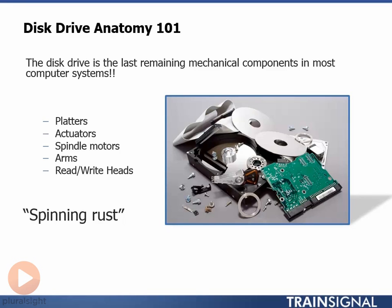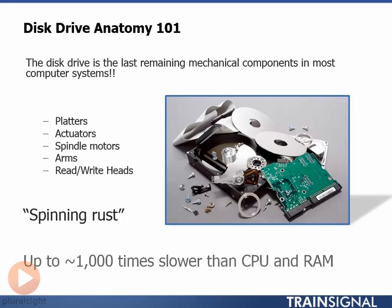To put it into perspective, if we were to compare the performance of a mechanical disk drive to the performance of a CPU or RAM, it's not uncommon for the disk drive to be more than a thousand times slower than its silicon-based competitors.